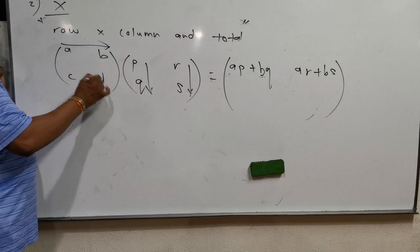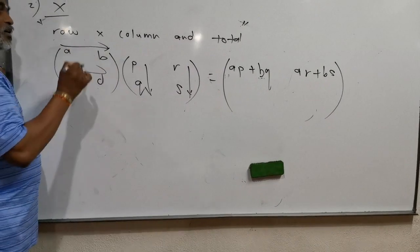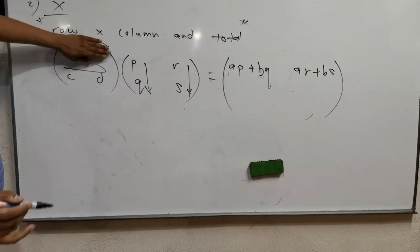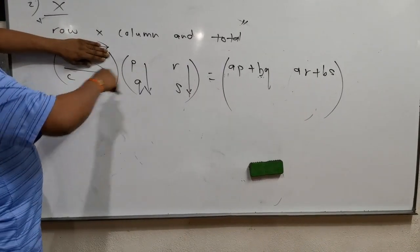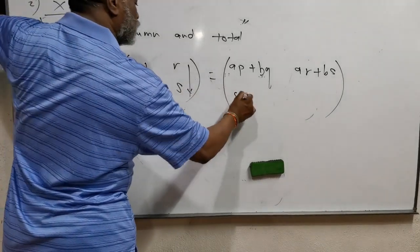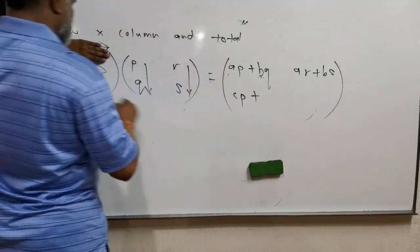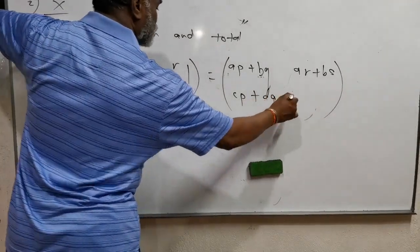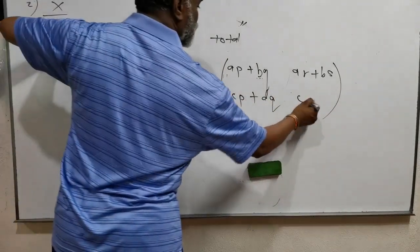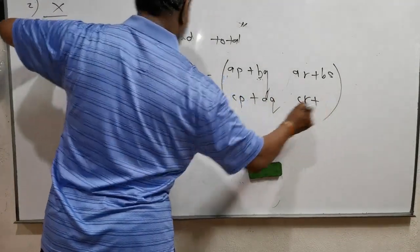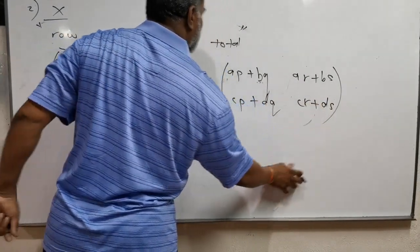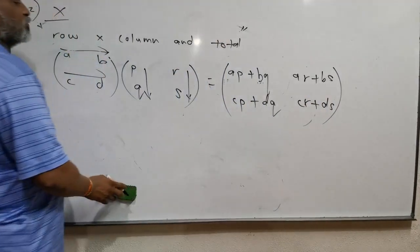If there are also rows c and d below, same method: c×p + d×q gives the second row first element, and c×r + d×s gives the second row second element. That is the way to multiply matrices.